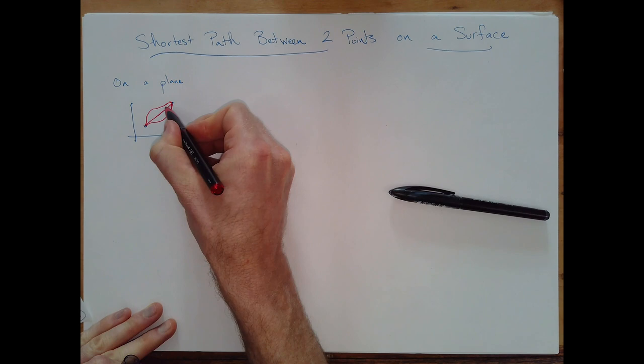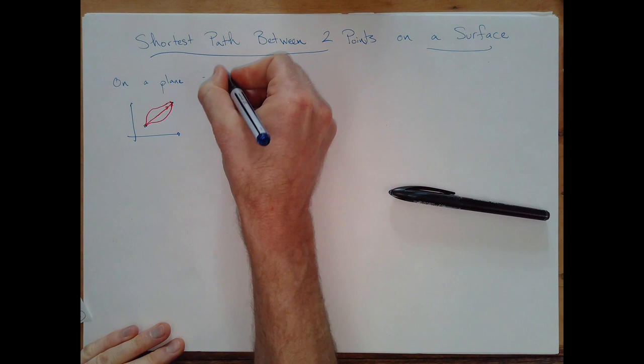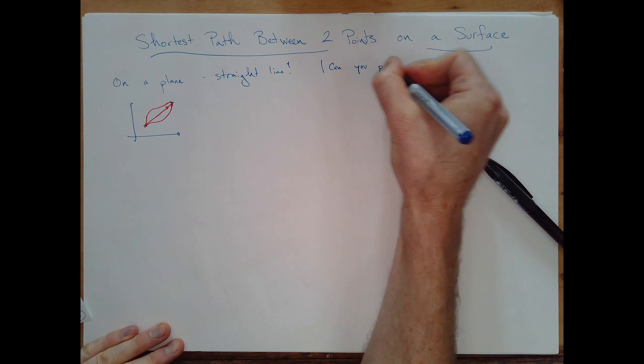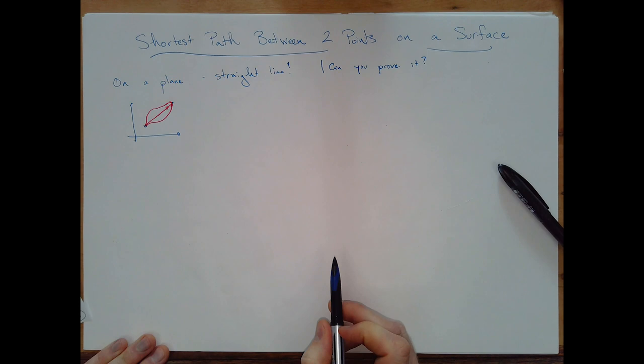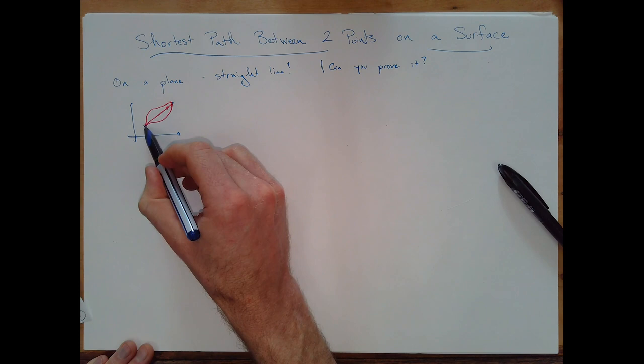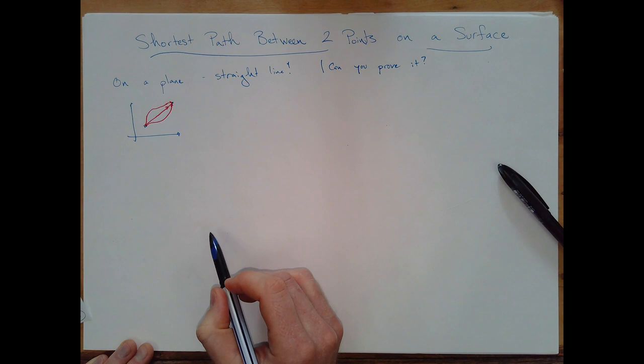We all know that it's the straight line, but you might think about how you would actually show that — in other words, can you prove it? That's not so trivial, because the space of possible paths is infinite. You need to look at this infinite space, really of functions — space curves that take me from there to there — and look at which one of those functions has the smallest arc length.